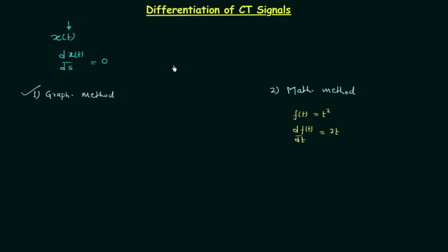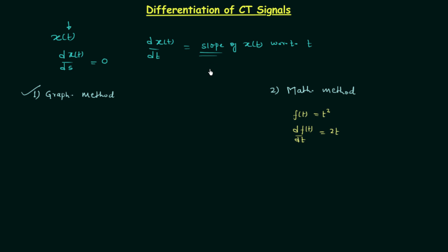In our analysis we will always differentiate the continuous time signal with respect to time, because in signals and systems, a signal is the variation of electrical quantities like current or voltage with respect to time. When you differentiate a signal with respect to its independent variable and differentiate only one time, the first derivative gives you the slope of the signal. Differentiating x(t) with respect to time gives the slope of x(t) with respect to time.